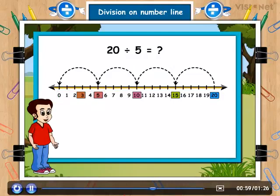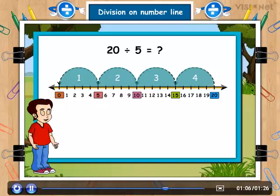Finally, we have reached at 0. That means the division is done. Now count the number of jumps. It is 4.